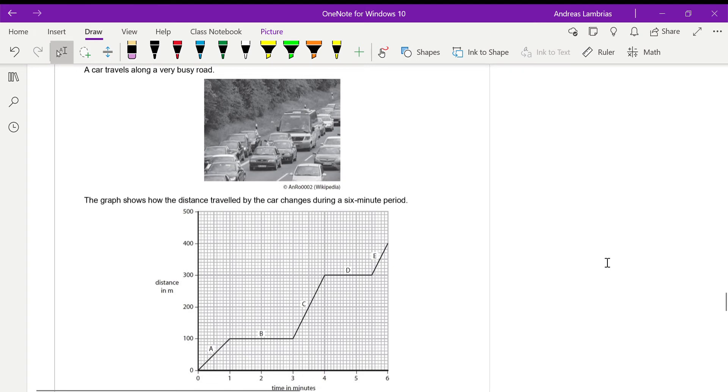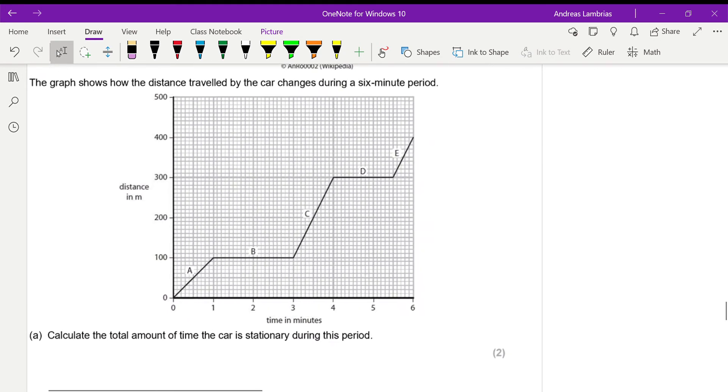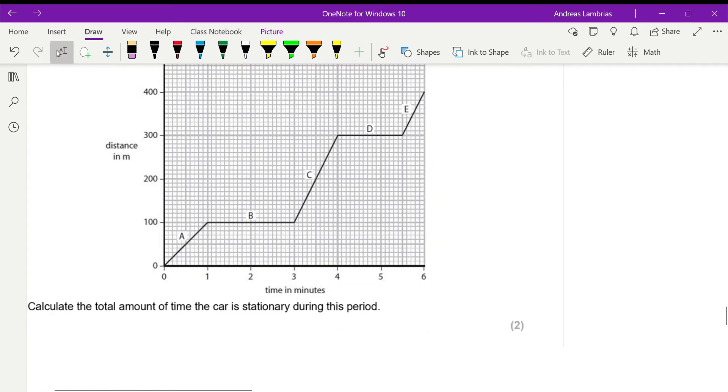In this question we have a car that's traveling along a very busy road and we can see the distance-time graph for a six minute period. First of all, let's just discuss the type of motion in each case.